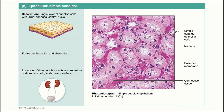The kidney tubules are where the body absorbs what it needs from the waste that will become urine. They are located deep within the kidneys themselves, so they aren't visible in this diagram. Simple cuboidal epithelium is also found in the secretory portion of glands — the portion that actually secretes substances.